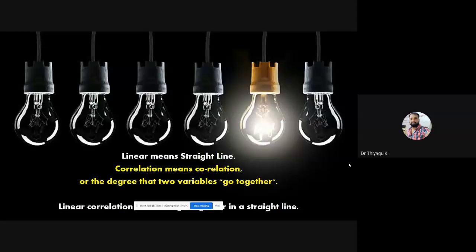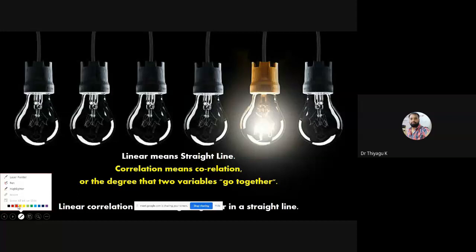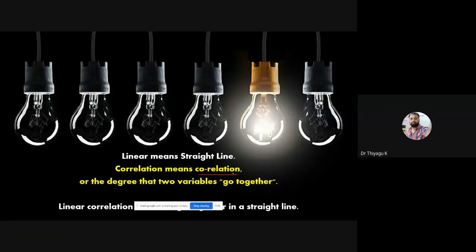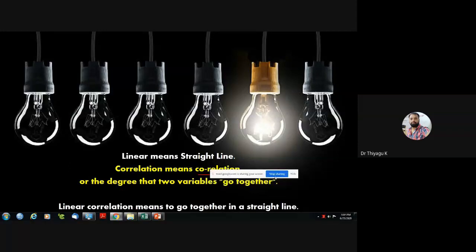Correlation — what is it? Correlation refers to the relationship between two variables: whether they go together or go in different directions. That is called correlation. Here, in correlation, we are going to find two things: the degree of strength as well as the direction. Linear correlation means to go together in a straight line.